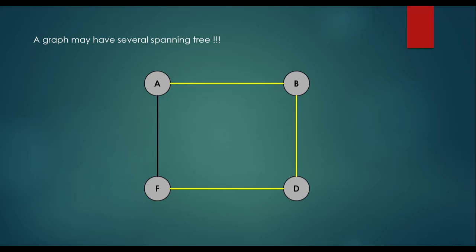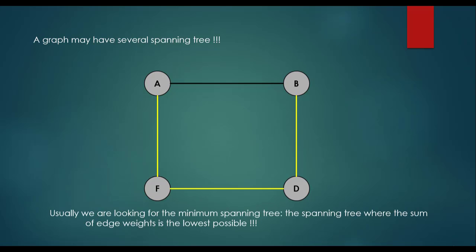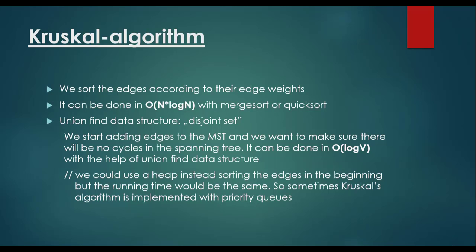We can leave a single edge out and decide which one to exclude. We can leave the edge between A and F, or between F and D, or between A and B — all give valid spanning trees. We are usually looking for the minimum spanning tree, where the sum of edge weights is the lowest possible.